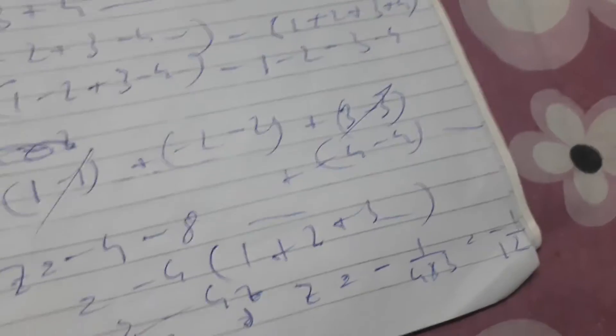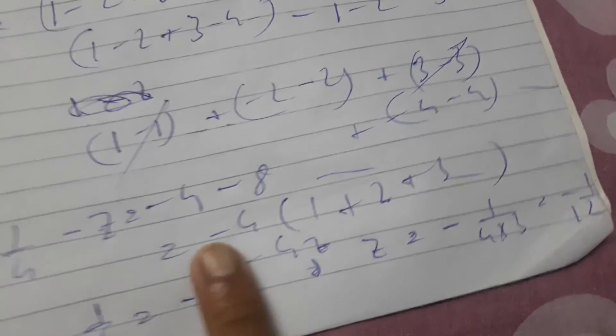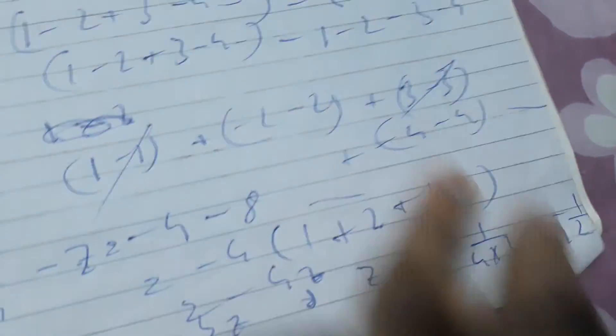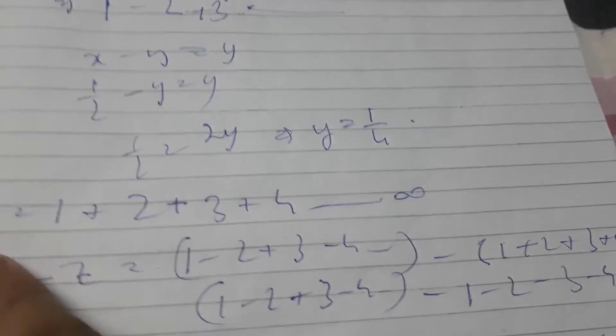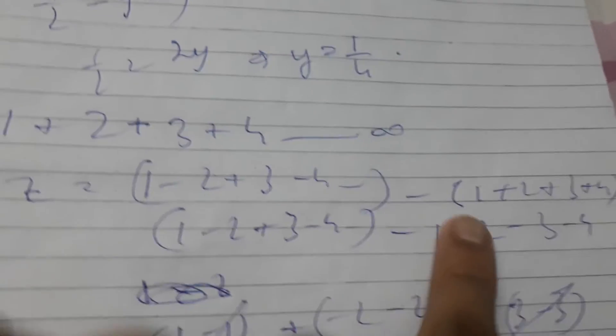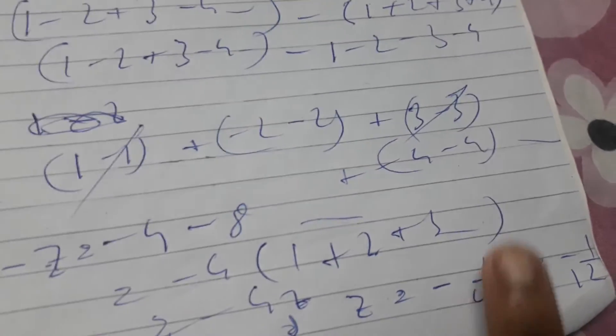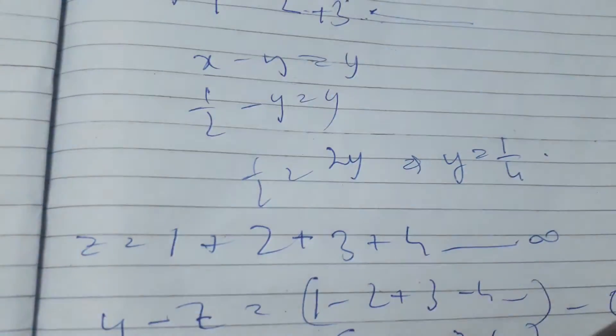This seems nonsensical — how can an infinite increasing sum of natural numbers end up negative and fractional? That's the paradox. But minus 1/12 is not the final word.